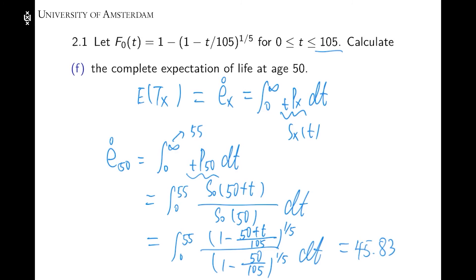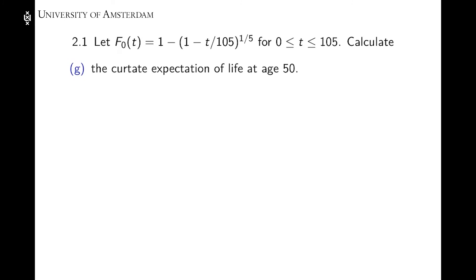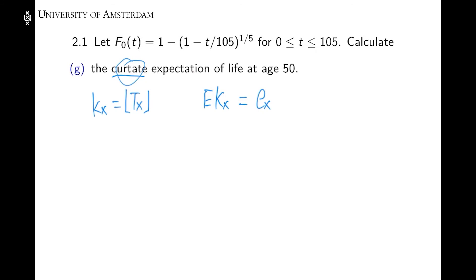So in this question, what we calculated is the complete expectation of life, which is the expected value of the future lifetime. In Part G, what we want is called the curtate expectation of life. For the future lifetime random variable, if we take the integer part of it, we denote it by K_x. This is the integer part of the future lifetime, also a random variable. The expected value of K_x gives us the curtate life expectation, denoted e_x.